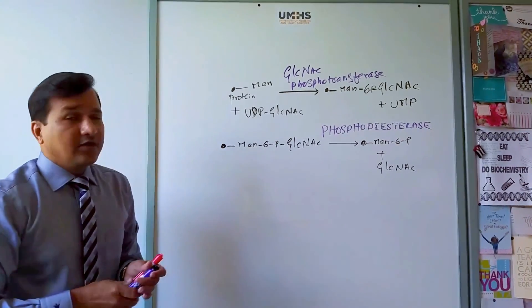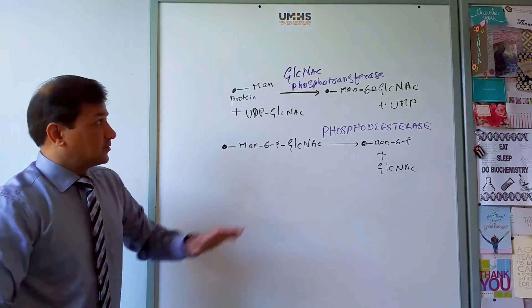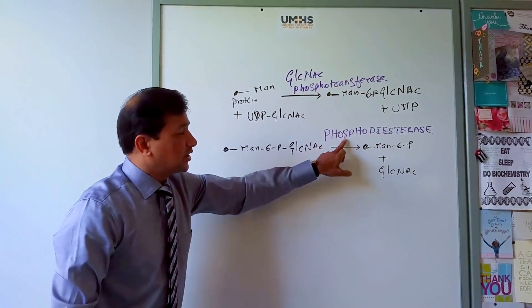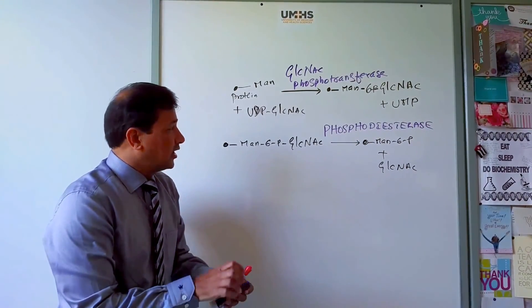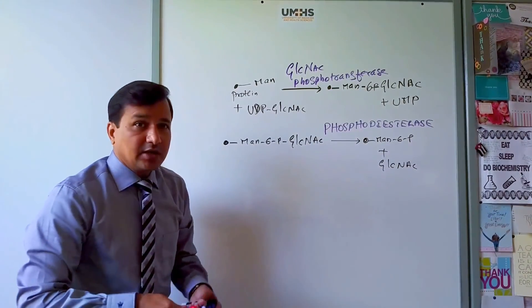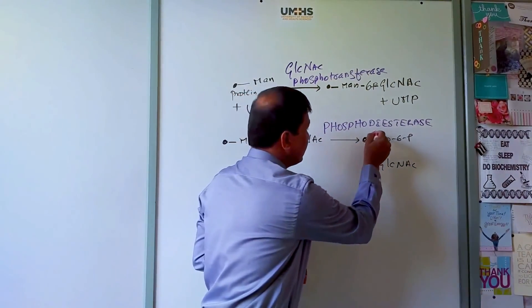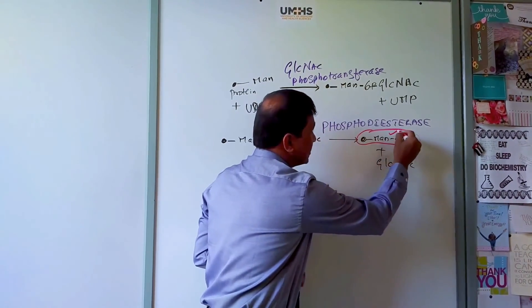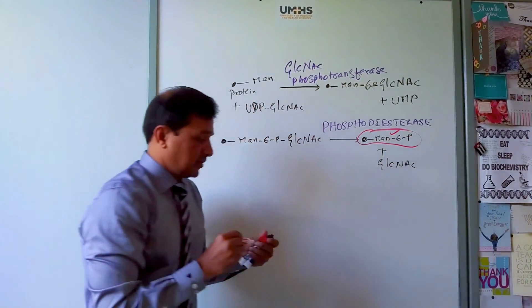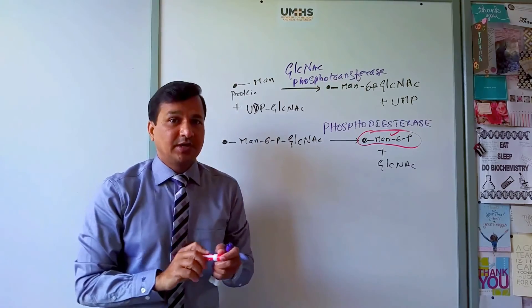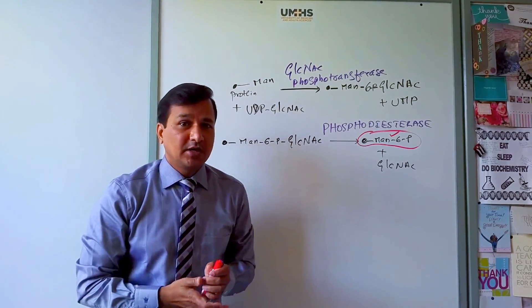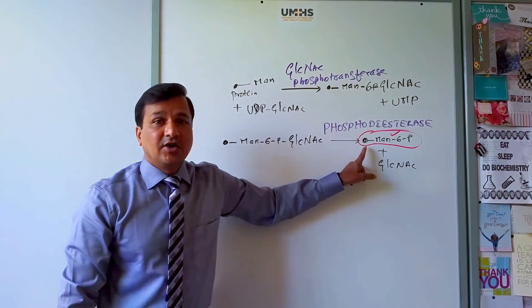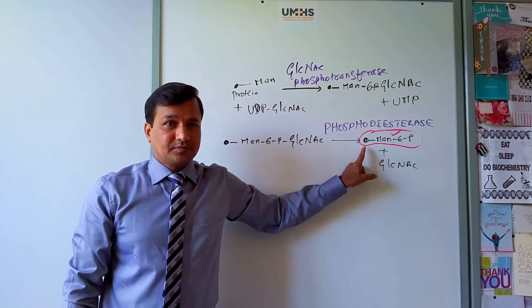So with the help of two enzymes — GlcNAc phosphotransferase and phosphodiesterase — you are able to attach 6-phosphate to the mannose residue of your protein. This is the chemical marker: mannose 6-phosphate. This protein is now destined to go to the lysosome.